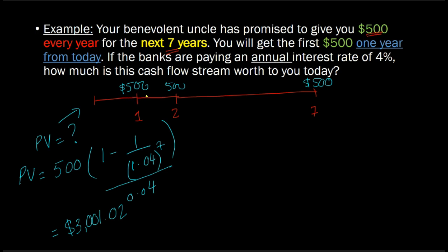And so you make your first $500 deposit in the bank at the end of the first year because that is when your uncle gives you the money. So you immediately go put it in the bank and then you get the next $500 two years from now. You get the last one at the end of the seven years.